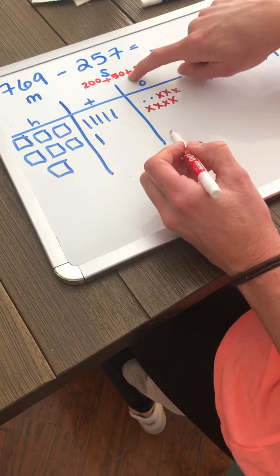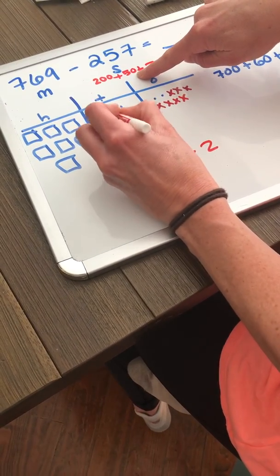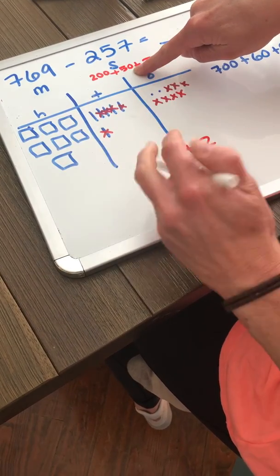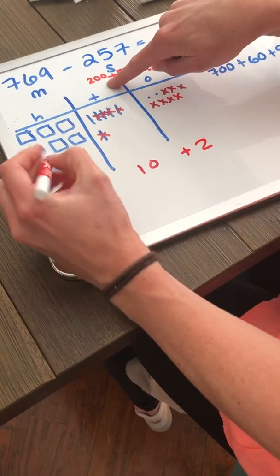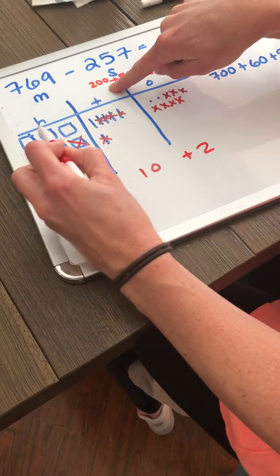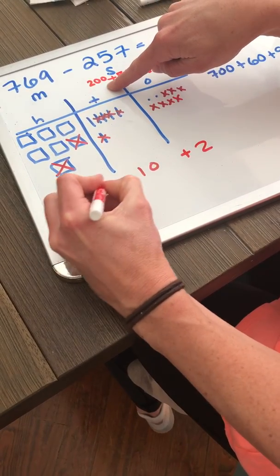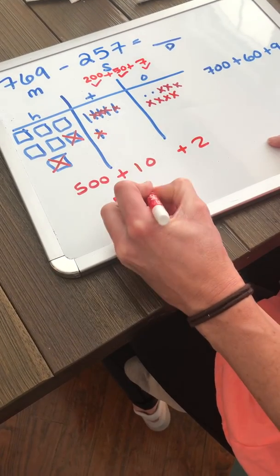Now let's take away five tens or 50: 10, 20, 30, 40, 50. I'm only left with one ten. Now let's take away 200: 100, 200. I am left with 100, 200, 300, 400, 500. So my difference is 512. 500 plus 10 plus 2 is 512.